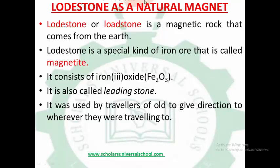Now, lodestone is a natural magnet. Lodestone is a magnetic rock that comes from the earth. Lodestone is a special kind of iron called magnetite. It consists of iron-3 oxide, Fe2O3. It is also called lodestone.